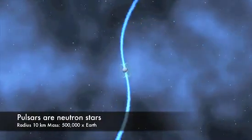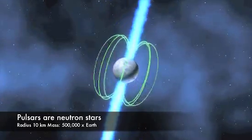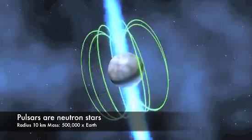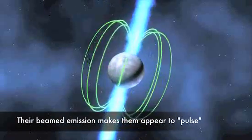Pulsars are neutron stars. They weigh about a half million times as much as the Earth but are only 20km across. Their rotation makes them appear to pulse once per rotation period and they spin up to an amazing 700 times per second.